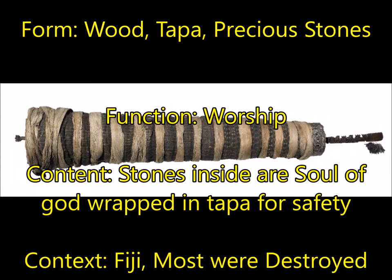Next we have the staff god, so called because its form is a very long skinny staff. That staff is wrapped in tapa with precious stones hidden inside. For function, it was meant to be worshipped — it is the representation of a god. For content, you can put that the stones inside are the soul of the god, wrapped in that tapa by the community for safety. Also remember that this is from Fiji and that when colonialism was happening there, missionaries told the natives that their staff gods were blasphemous or evil and needed to be destroyed or burned, which is why we have very few good examples of the work today.